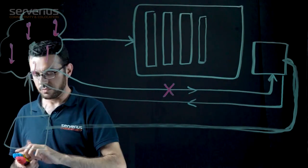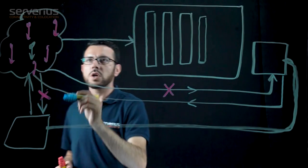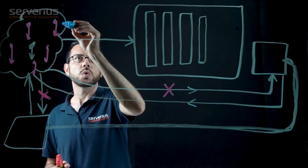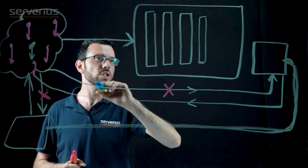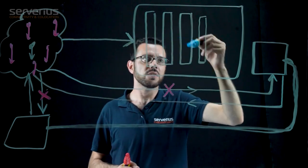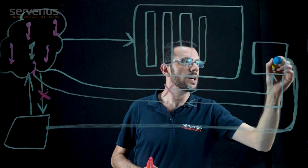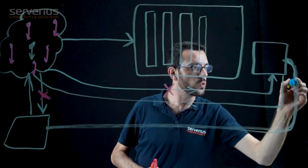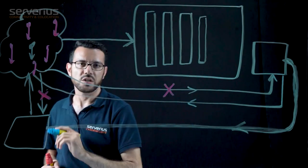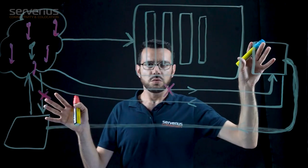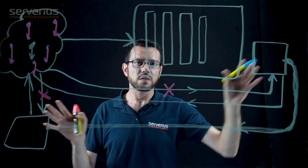So the incoming traffic will go first to our protection environment or protection cloud, will be filtered by our protection layers, and will be sent through the GRE tunnel to your infrastructure. So in both scenarios your network is protected against DDoS attacks.